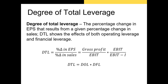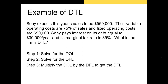The final measure of leverage is the degree of total leverage, or DTL. This metric measures the percentage change in EPS that results from a given percentage change in sales, showing the combined effects of both operating leverage and financial leverage. We measure the DTL by either combining the DOL and DFL formulas — for example, (gross profit / EBIT) × (EBIT / (EBIT − interest expense)) — or more simply, by multiplying our degree of operating leverage by our degree of financial leverage.